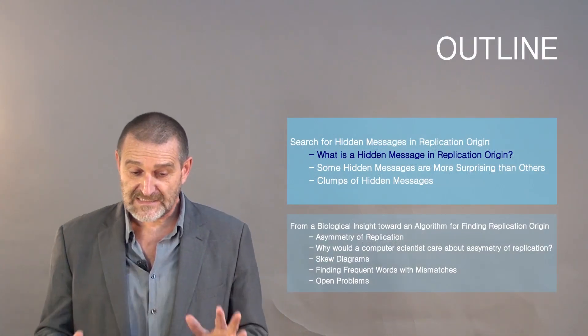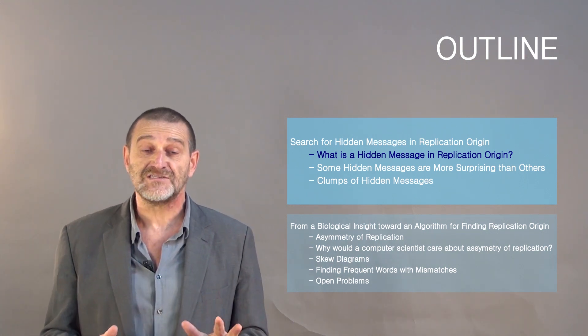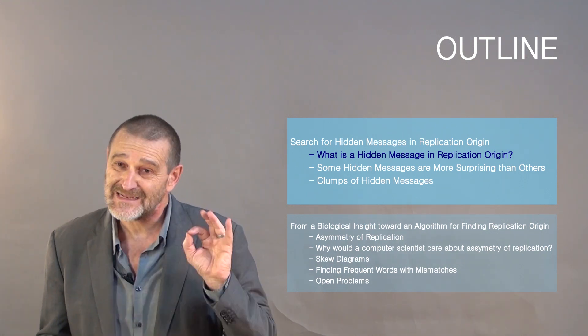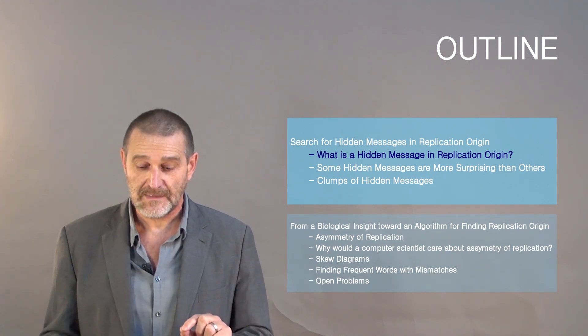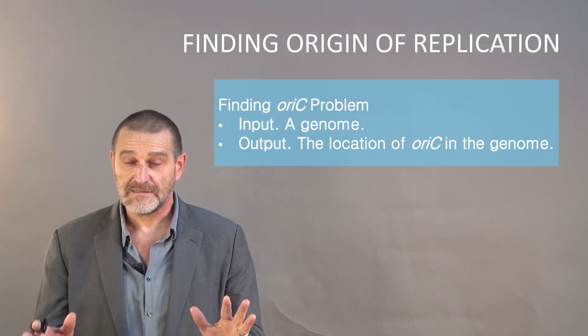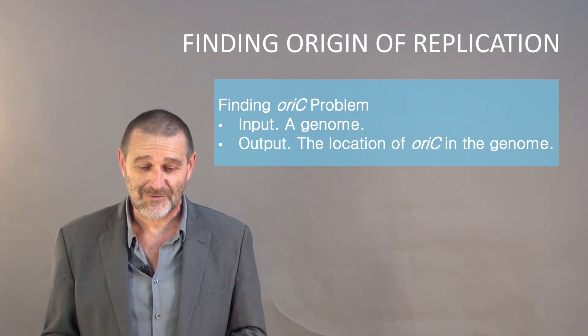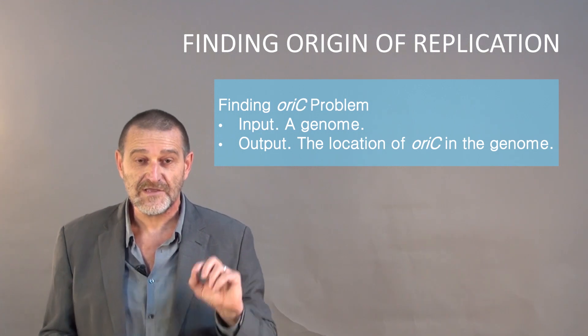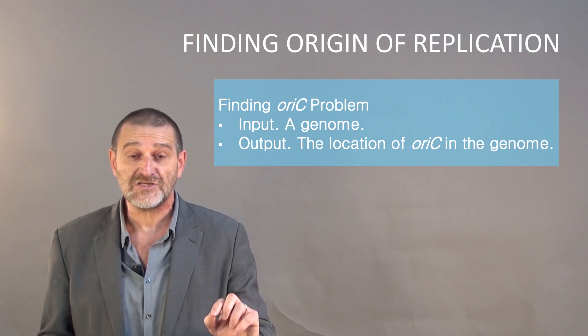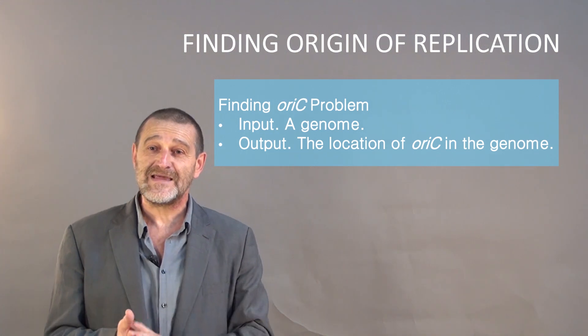So let's go ahead and let's first try to answer the question of what are the hidden messages in the replication origin that help E. coli genome to figure out where to start. And here's the first, or should I say the third already, problem in this course: finding origin of replication. I'll give you a genome. You have to give me the location of origin of replication in this genome. Does the problem make sense?